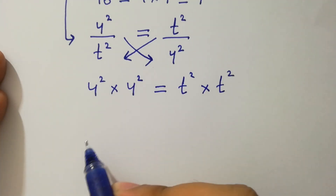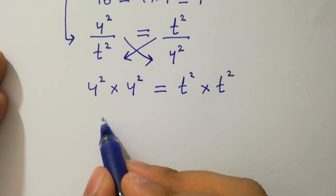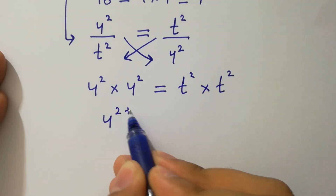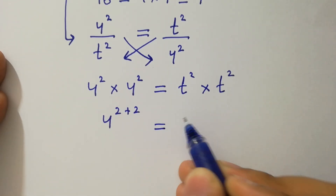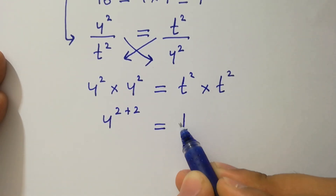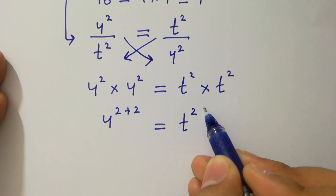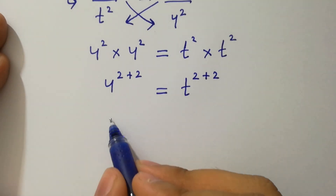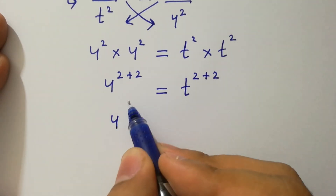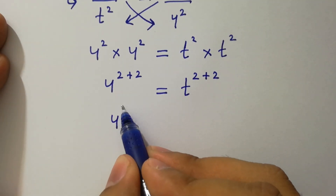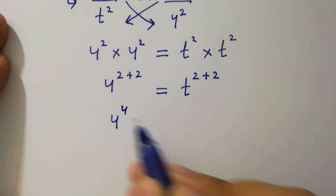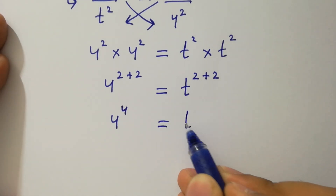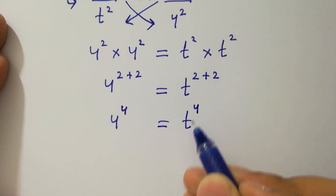So here, by the basic power rule, we have 4 to the power 2 plus 2 equal to t to the power 2 plus 2. That gives us 4 to the power 4 equal to t to the power 4.